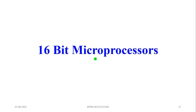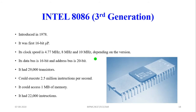Now we move to the 16-bit microprocessor. The first 16-bit microprocessor is the 8086, a third generation microprocessor. It was introduced in 1978. The clock speed is 4.77 MHz, 8 MHz, or 10 MHz depending on the version. It has a 16-bit data bus and a 20-bit address bus. The single chip contains 29,000 transistors and can execute 2.5 million instructions per second. It can access 1 megabyte of memory and has 22,000 instructions.